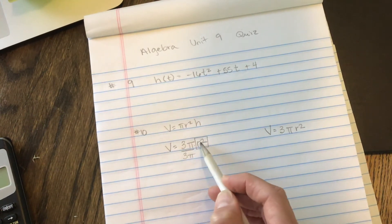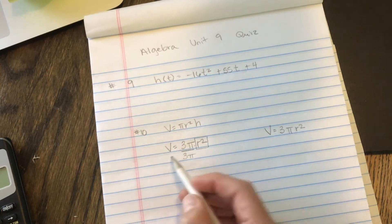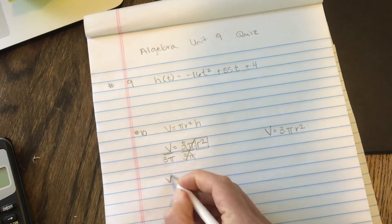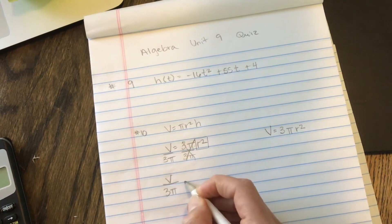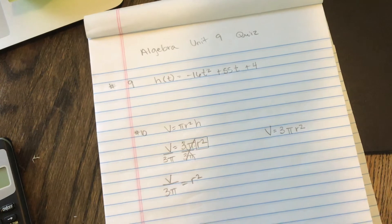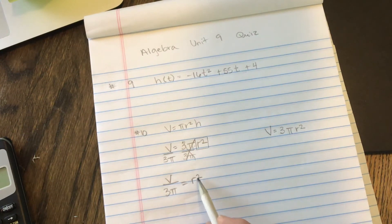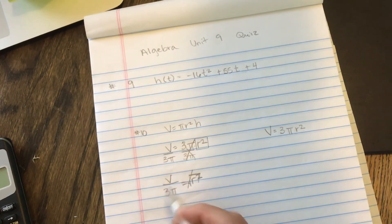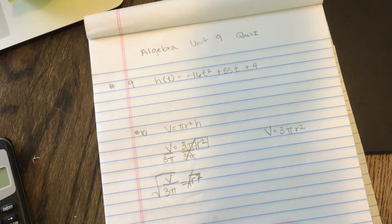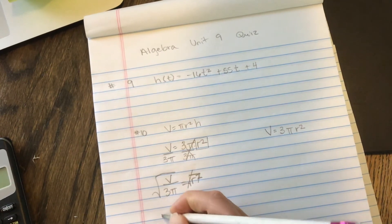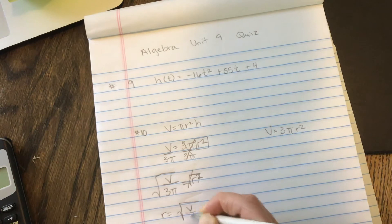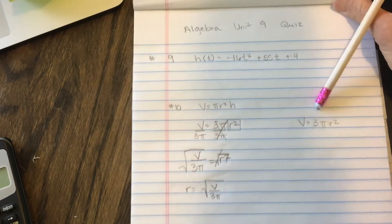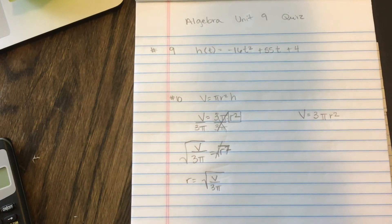And right now, since those are multiplying R squared, I want to divide by 3π. And if I divide this side, I have to divide the other side. So that cancels. So now I have volume divided by 3π equals R squared. Well, my R still isn't alone because it's squared. The opposite of squaring a number is taking the square root. And if I square root one side, then I have to square root the other. So R equals square root of V divided by 3π. That's solving for R.